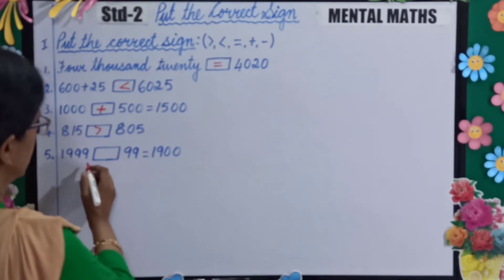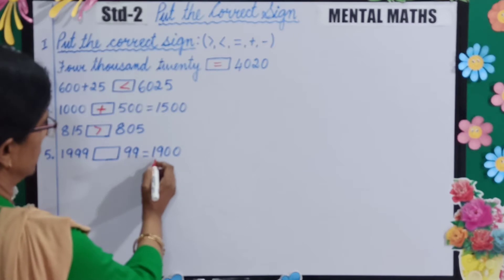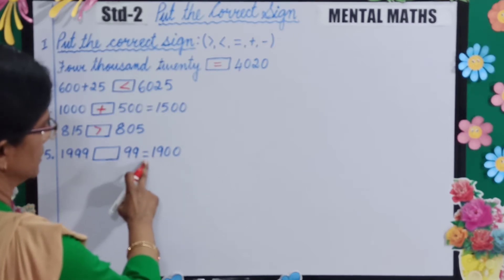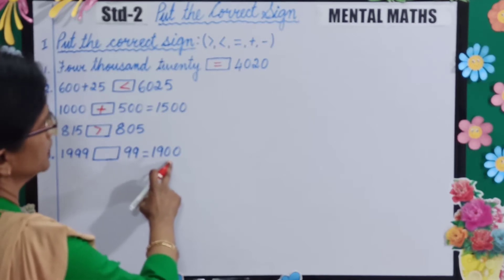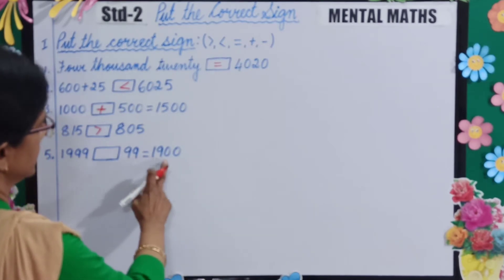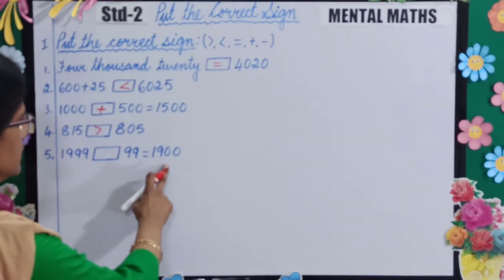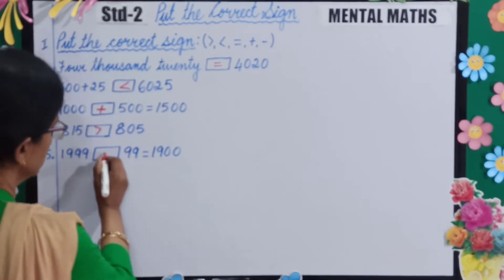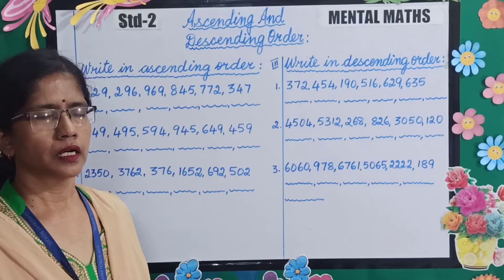1000 dash 90 is equal to 1900. Use the plus sign here, as 1000 plus 900 equals 1900.